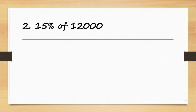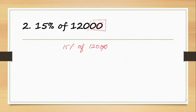Next, 15% of 12,000 — two zeros are cancelled. So 120 is there. Now 15 into 120 is done. Either end you multiply, and that is the answer.